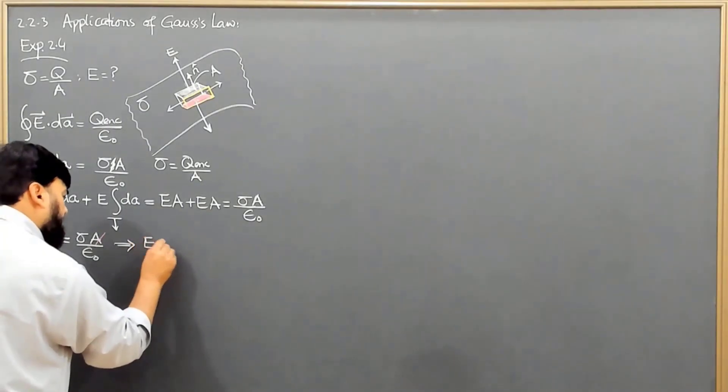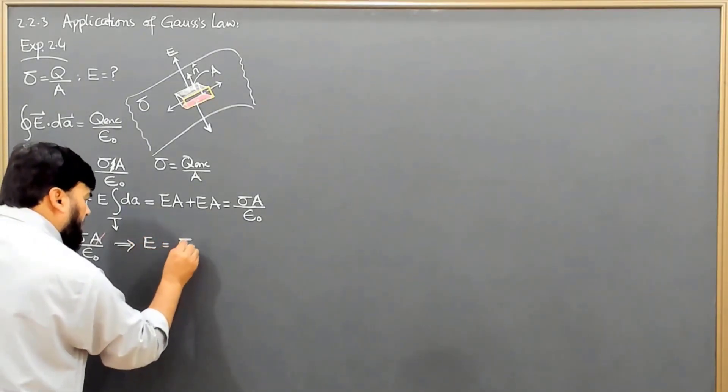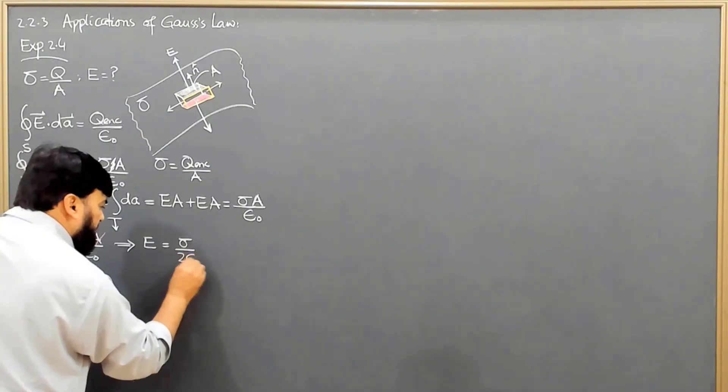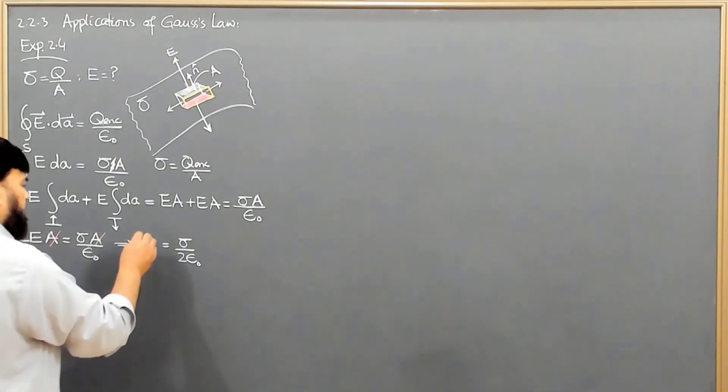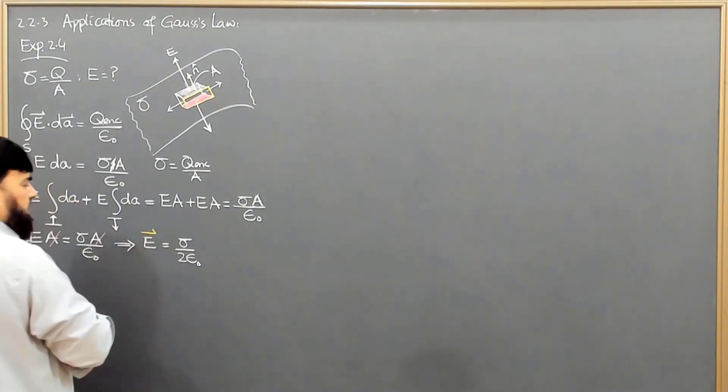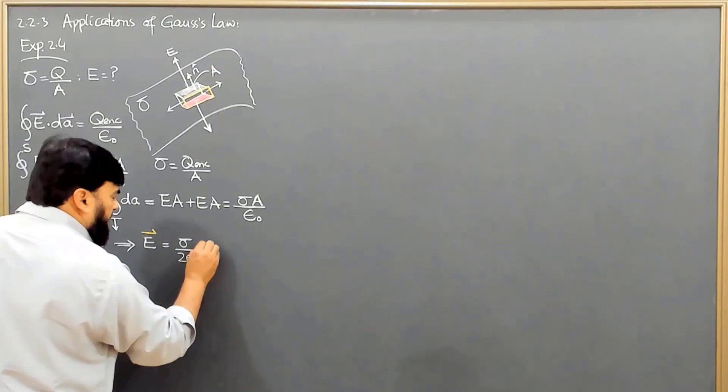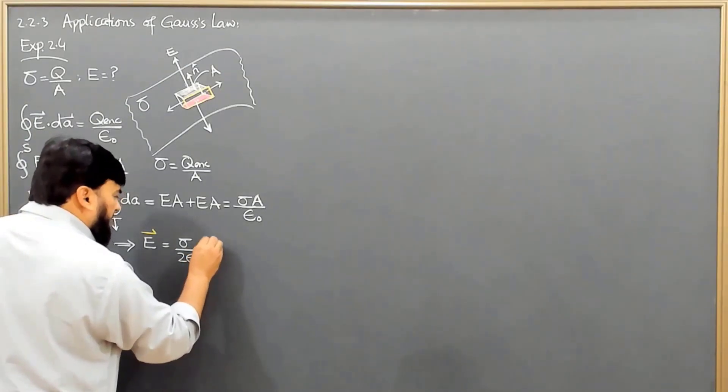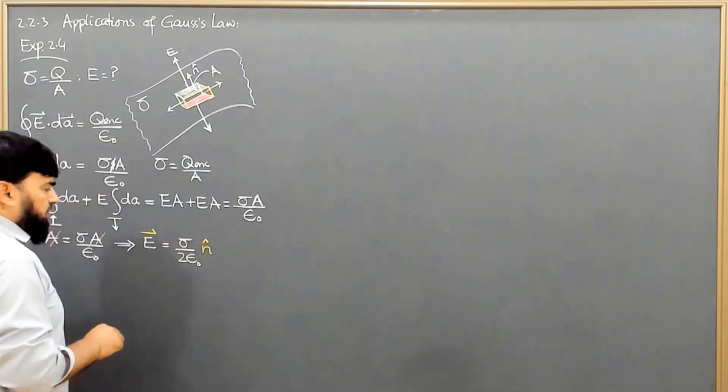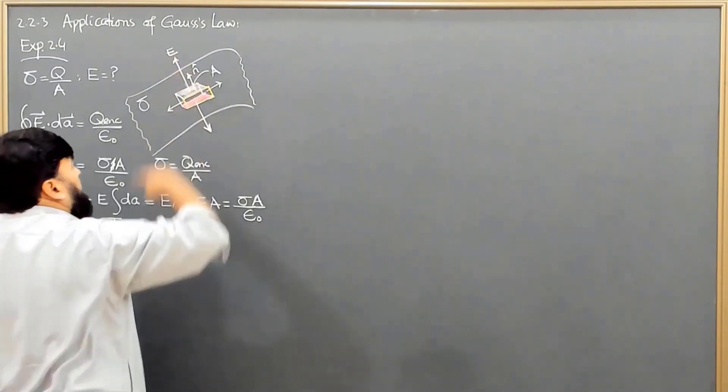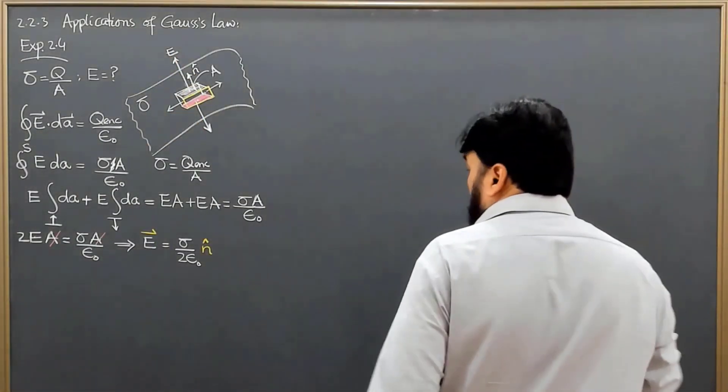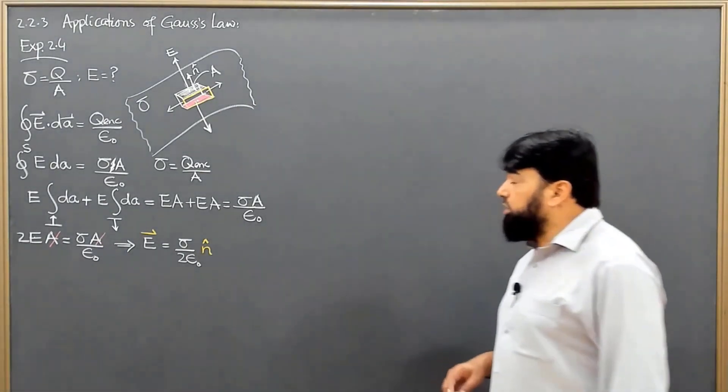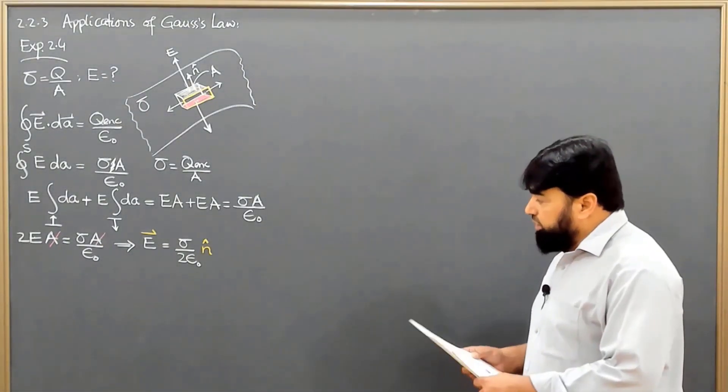The electric field equals sigma over 2 epsilon naught. If we write this in vectorial form, then we have the vector form where the electric field is normal to the surface, along the direction. We are having the electric field of an infinite sheet of charges.